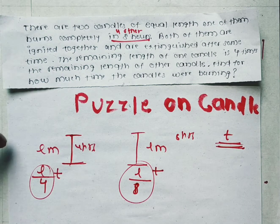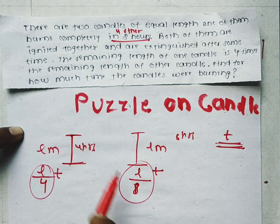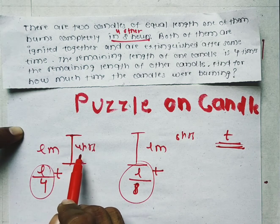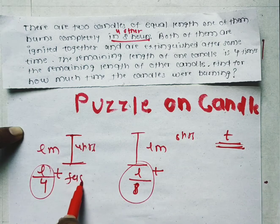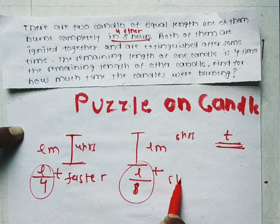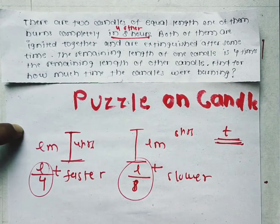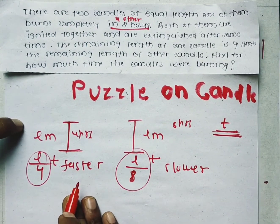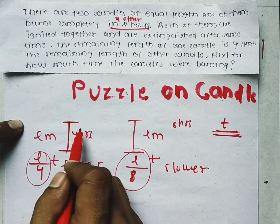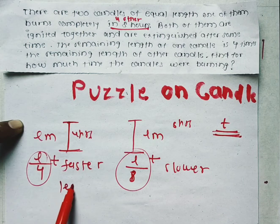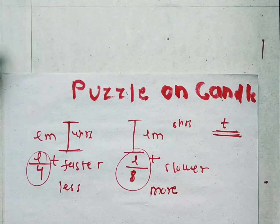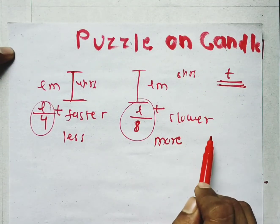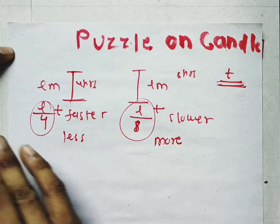Now let's find the remaining length. The candle that burns in 4 hours is faster, and the one that takes 8 hours is slower. So after T time, the remaining length of the faster candle will be less, and the remaining length of the slower candle will be more. The question states the remaining length of one candle is 4 times the remaining length of the other.